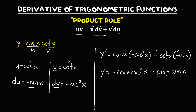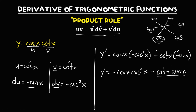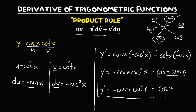Since there is a trigonometric identity for cotangent x, from the figure we can see the relationships: sine, cosine, cotangent, tangent, secant, and cosecant. If tangent times cosecant equals secant, then cotangent times sine equals cosine. So cotangent x times sine x simplifies to cosine x, giving us the final derivative: y prime equals negative cosine x times cosecant squared x minus cosine x.